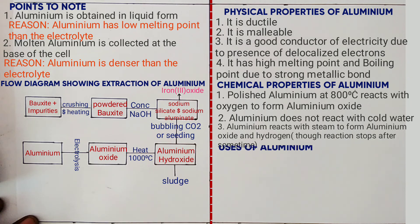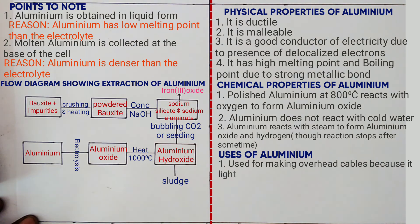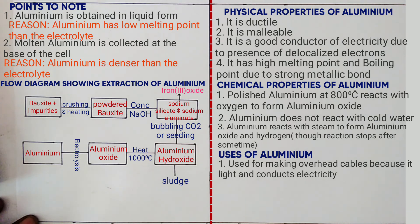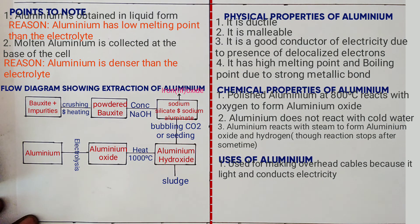Uses of aluminium: it is used for making overhead cables because it is light and a good conductor of electricity; it is used for making cooking vessels because it is a good conductor of heat and is not easily corroded by cooking liquids due to the presence of a coating of aluminium oxide. An alloy of aluminium and magnesium is used for making parts of aircraft because of its low density. Duralumin, which is an alloy of aluminium, is used in construction of aircraft and car window frames because it is light, strong, and hard. In the next lesson, we are going to look at extraction of copper. Thank you.